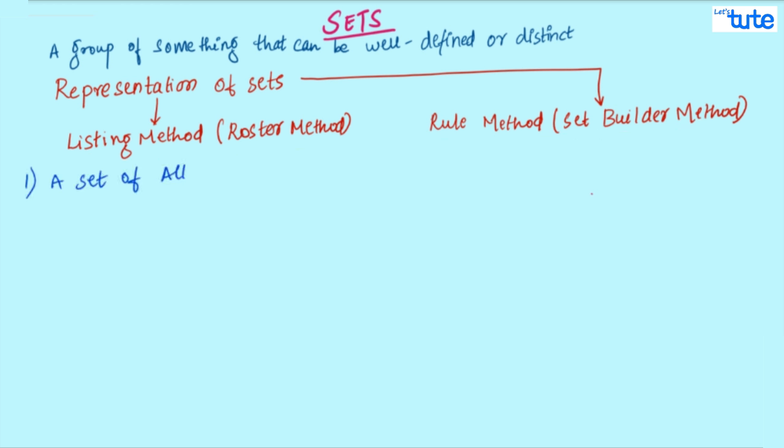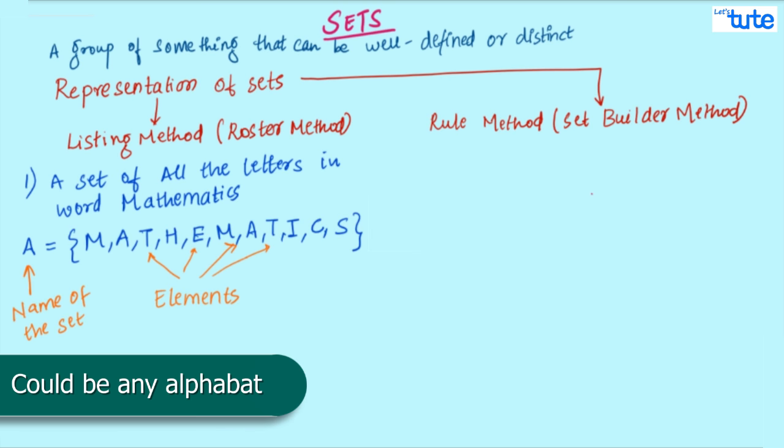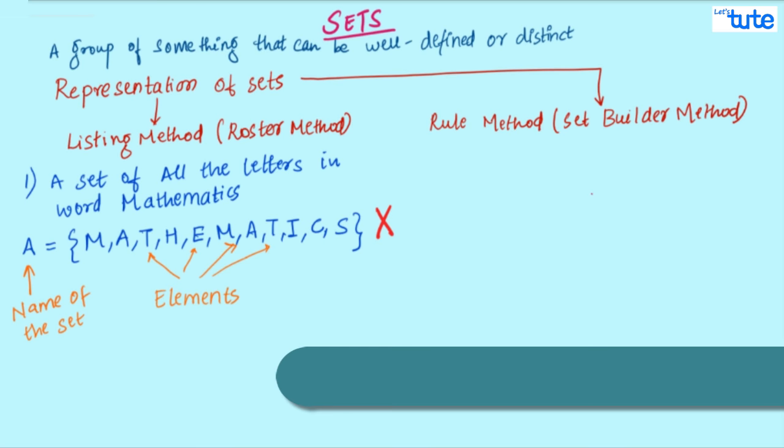Let's see what's listing or roster method is. If I want a set of all letters in the word mathematics, then how will I write it? Well, this is a very simple method. Let's look at this in a little more detail. All the letters in the brace or curly brackets are known as elements. A or any letter can be used to represent this set. However, there's one tiny mistake that is there in this set.